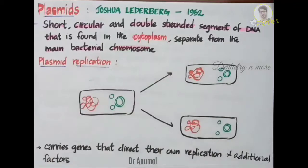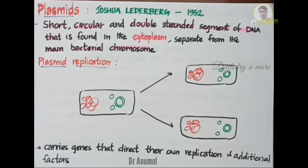As we all know, bacteria have a main bacterial chromosome. Additional to this main bacterial chromosome, we can see plasmids. They are very similar to this bacterial chromosome but short, circular and double-stranded.